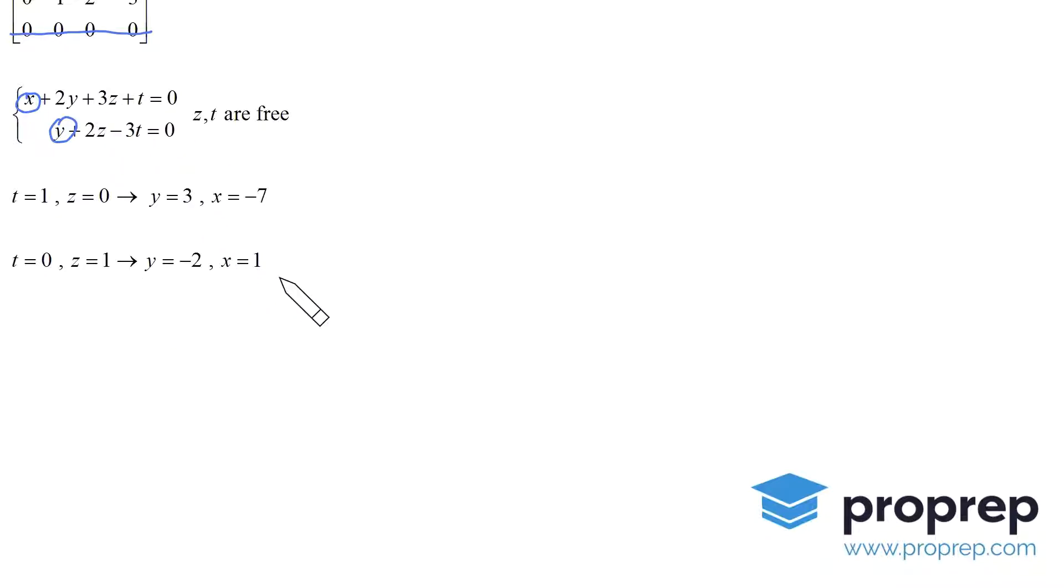This one, if I take x, y, z, t, is (-7, 3, 0, 1). That's this. And here I have (1, -2, 1, 0). That's this. And these two form a basis for the kernel.